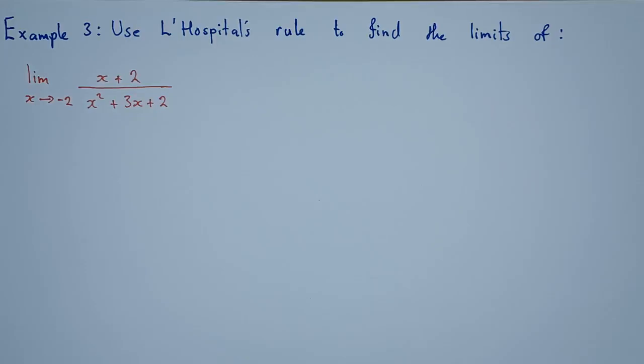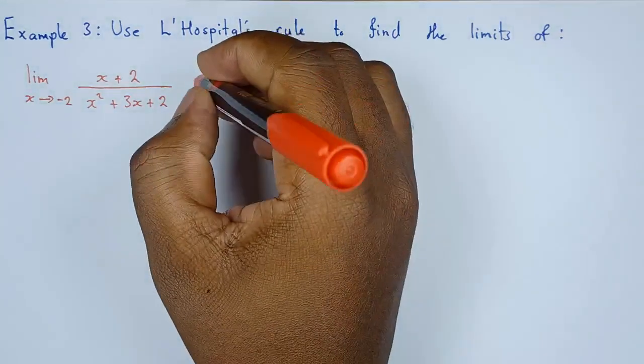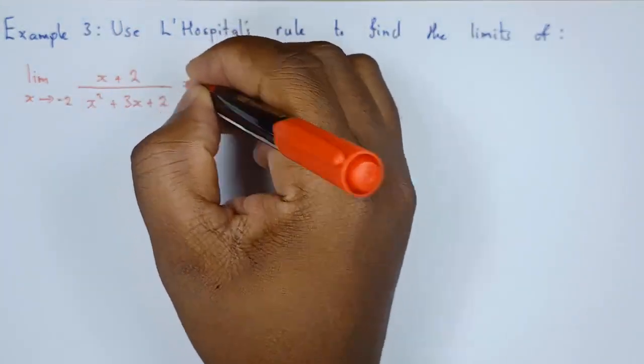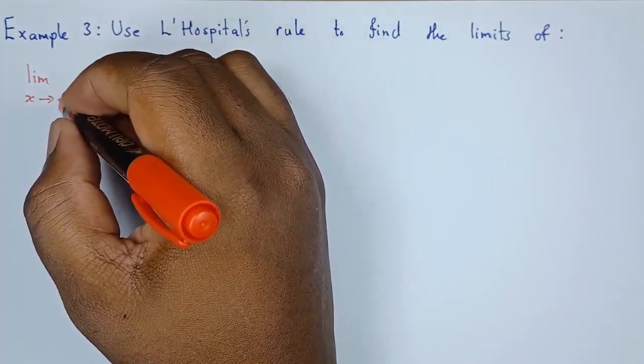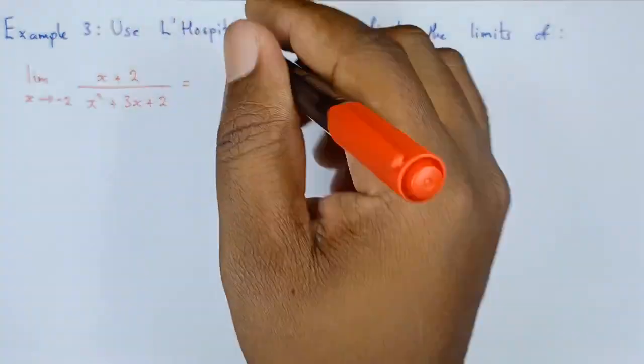Okay, so let's see how we can find the limits for this particular expression. If we go ahead and substitute the limit, this is what we want to get. Replacing x with negative 2 because x approaches negative 2, this is what we want to obtain.